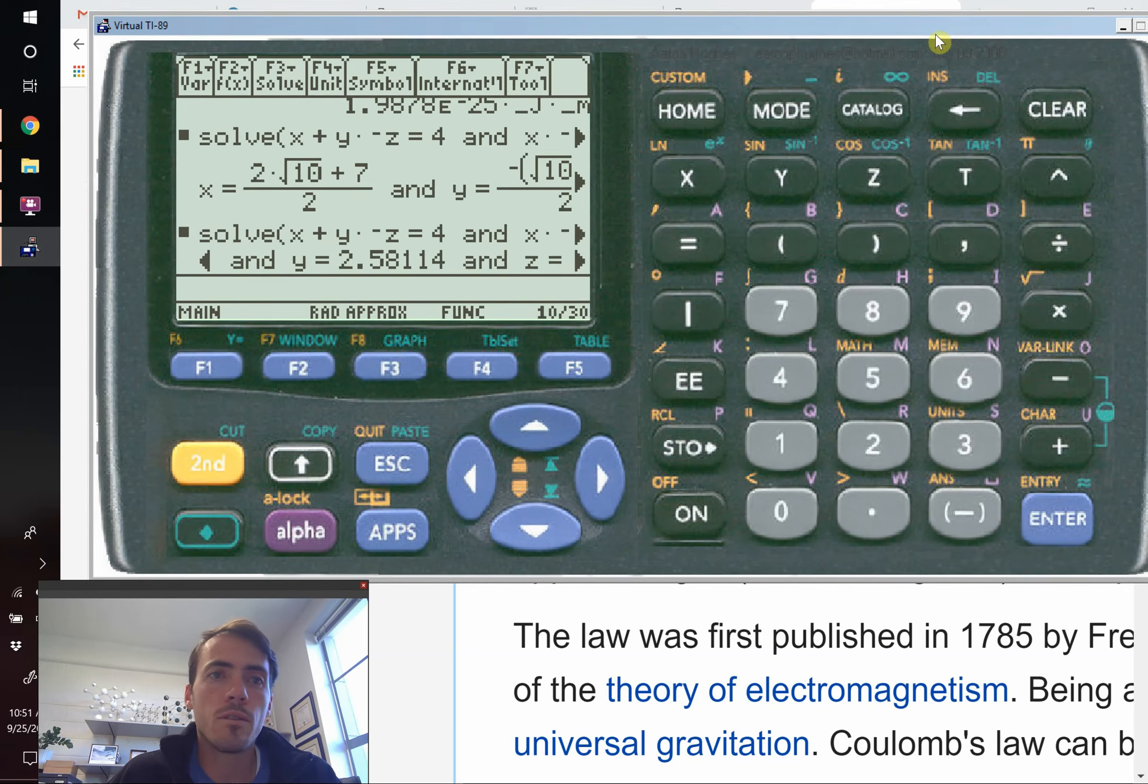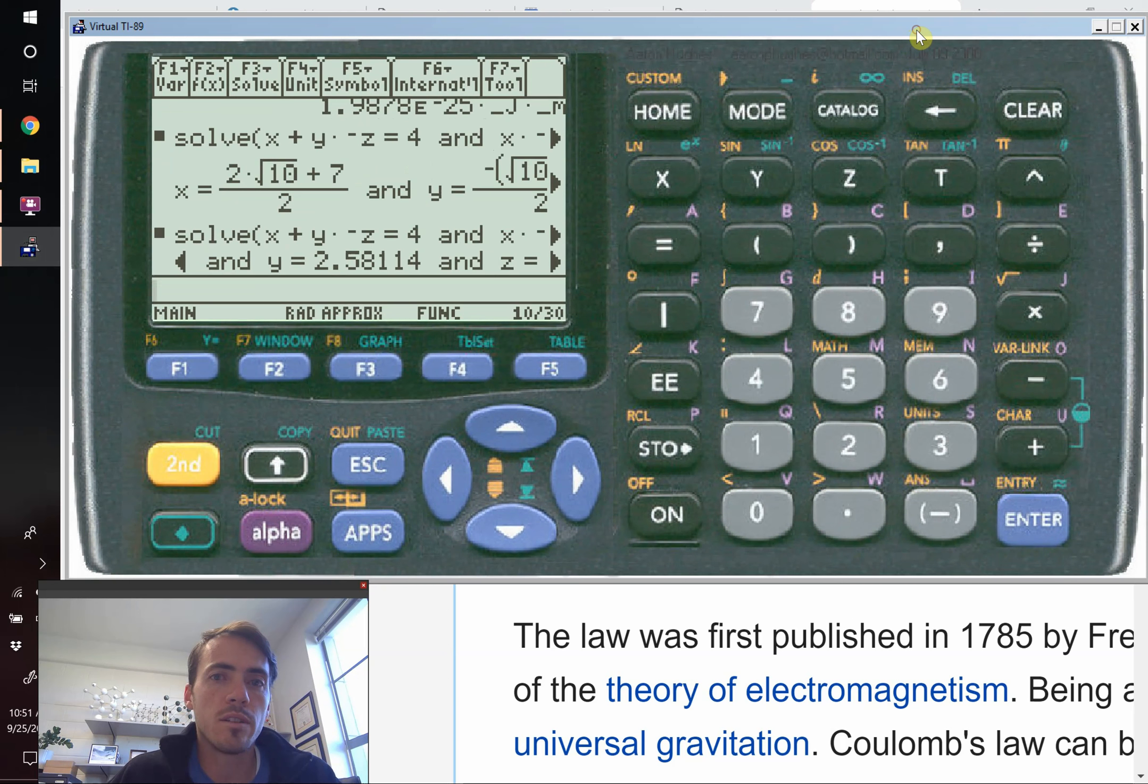When we do this, the first thing we need to do is recognize that the constant in front of it, k, is equal to 1 divided by 4π multiplied by the permittivity of free space. Your calculator doesn't know what the permittivity of free space is, that's not a pre-programmed constant, but we can create one really easily.